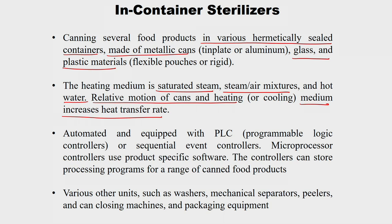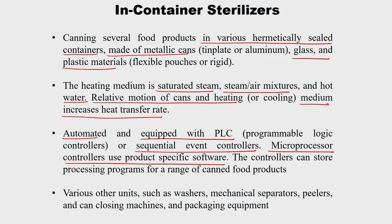The normal process is to first heat and hold for some time, then cool to normal temperature. Relative motion between cans and heating or cooling medium increases heat transfer rate. Nowadays these systems are automated and equipped with PLC and sequential event controllers to maintain products at particular temperatures. Microprocessor controllers use product-specific software — for example, if processing low acid food, a specific temperature must be maintained for a particular time, and the software automatically handles temperature and time control.